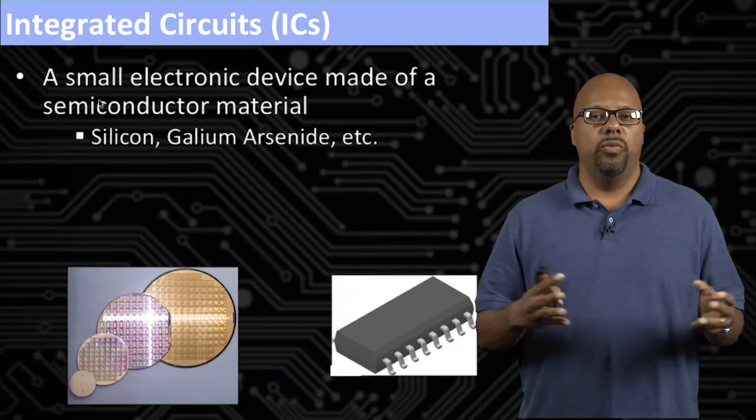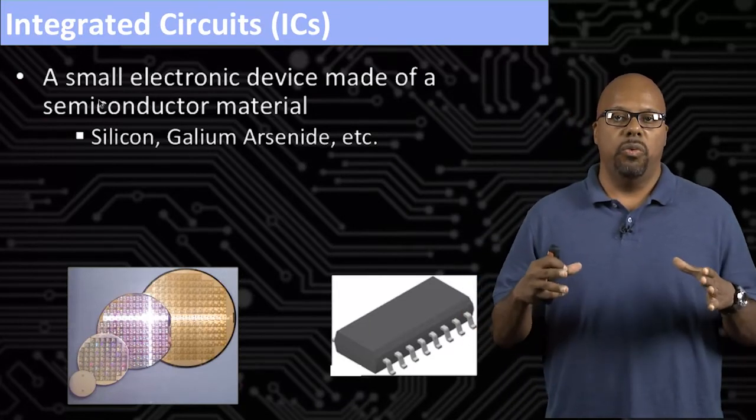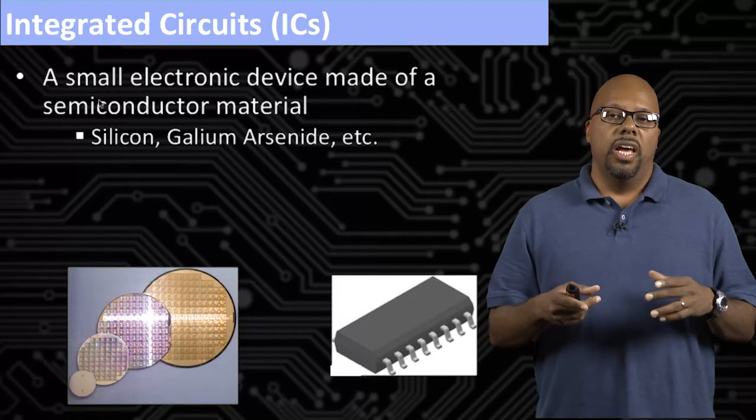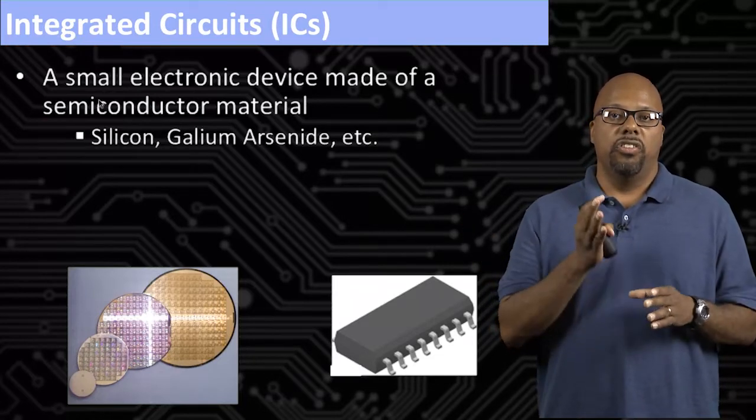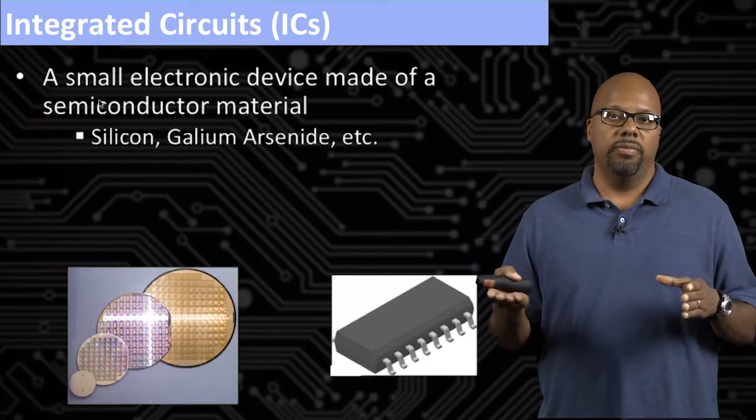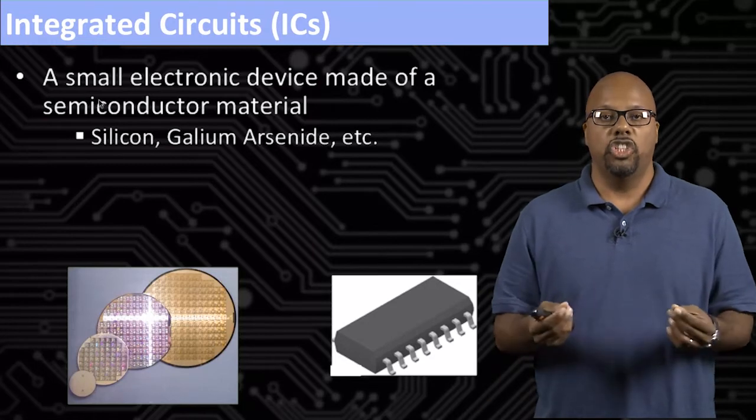And we're not going to talk about the fabrication technology, except to say that they're basically made on these big wafers. So you can see down there, you can see these disks, these flat disks, these circular disks. So those disks are slices of silicon, and you chop them up into little rectangles, and each rectangle is a chip.